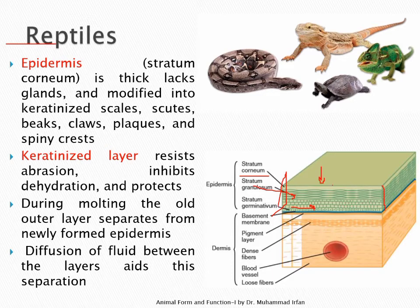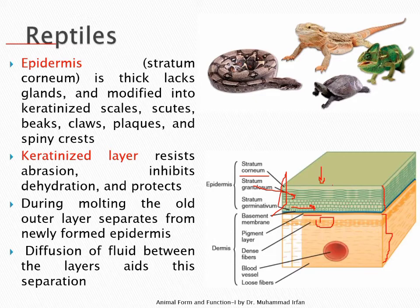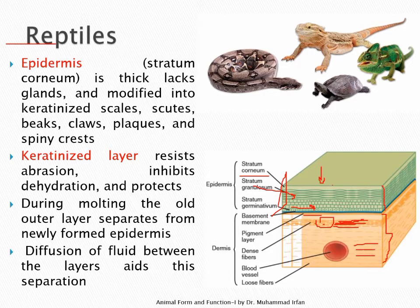The basement membrane is an extracellular material to which the epithelial cells adhere. Beneath it is a pigmented layer in the connective tissue containing quinone substances, one of which is melanin. Then there is a dense fiber layer where connective tissue protein fibers lie close together forming a compact connective tissue. Below that are loose fibers with blood vessels passing through, since connective tissue is highly vascularized, nourishing both the connective and epithelial tissue.